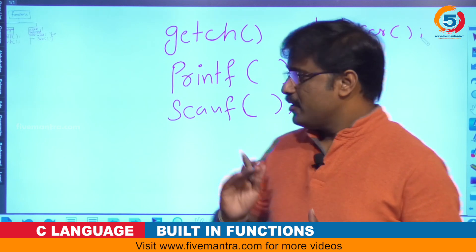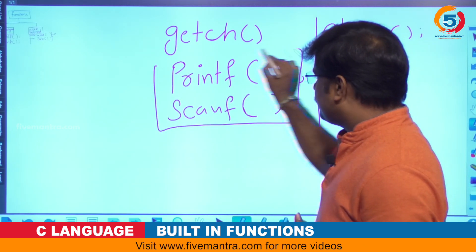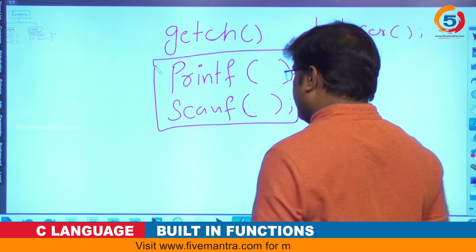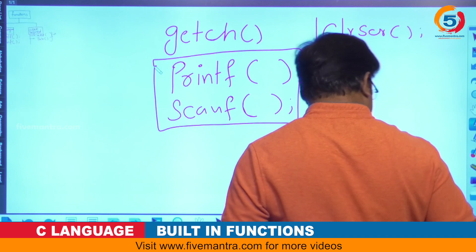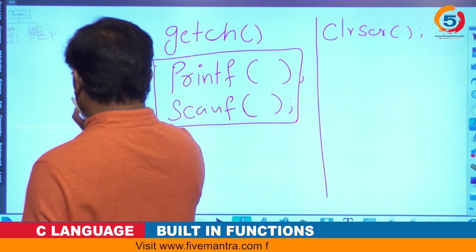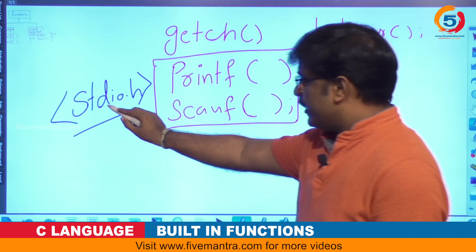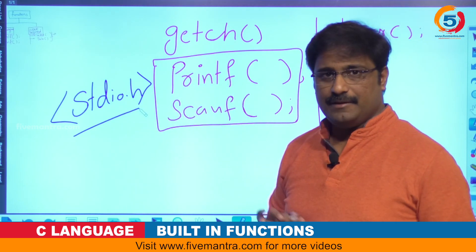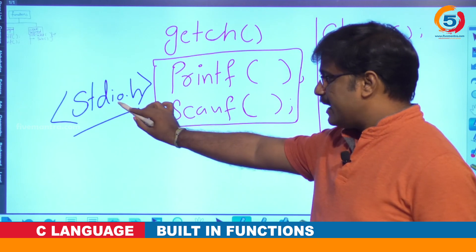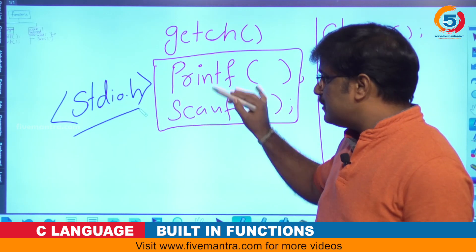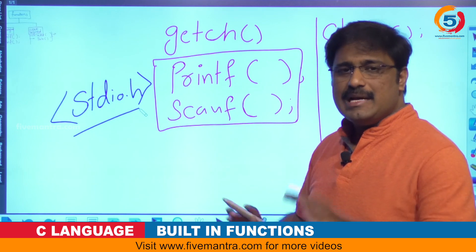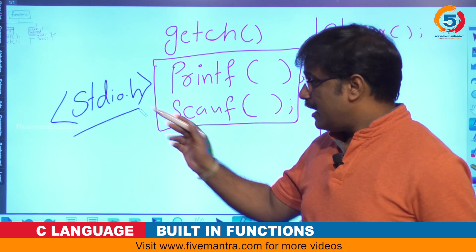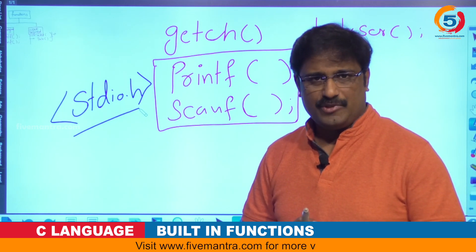Whenever you are writing a program and want to use these functions, they are available in a header file called stdio.h. This header file holds all standard input/output functions — printf and scanf. With the help of stdio.h, you will get the source code of these functions and can use them in your application. After including stdio.h, if you have not included it, these functions cannot work.